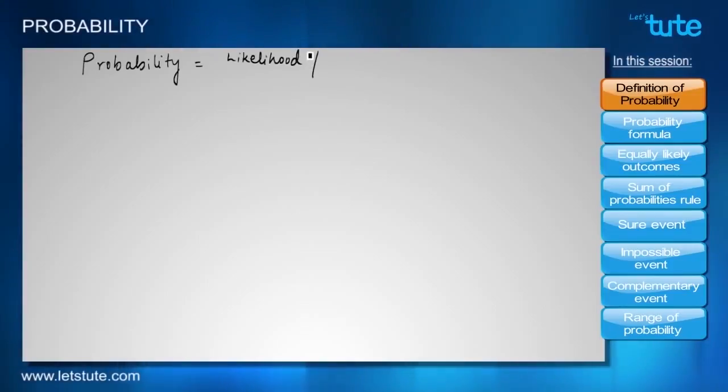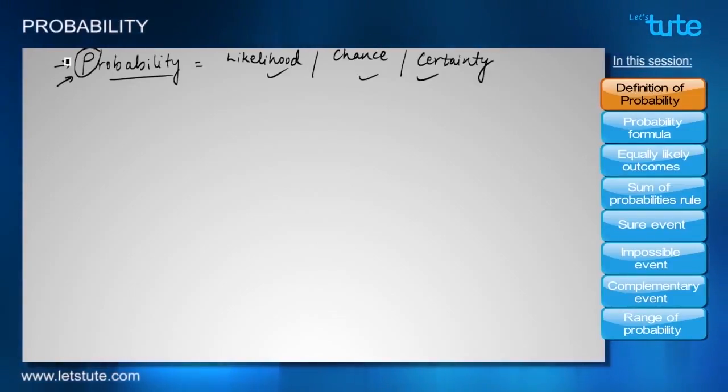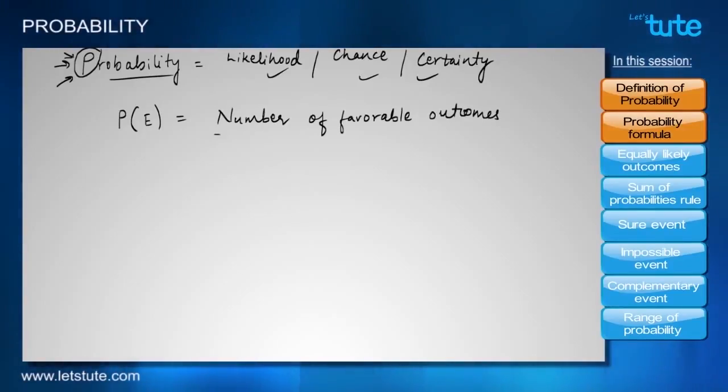It is the likelihood of something happening, or the chance that an event will take place, or the certainty that is involved in an event. When we hear these terms, we should be sure that we are talking about probability. Normally, it is denoted with capital letter P. So probability of an event, which we can denote as P(E), can actually be calculated with a formula.